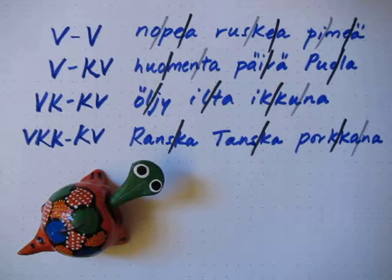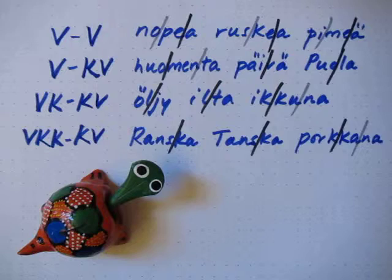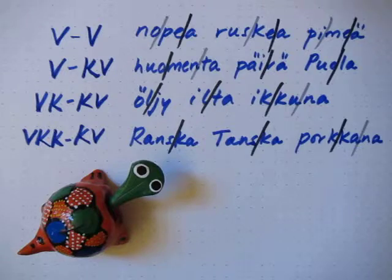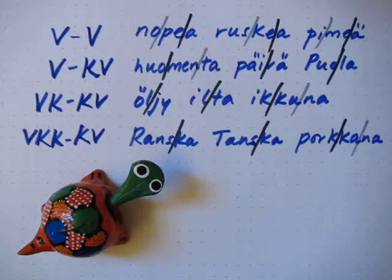There are four main categories of syllable patterns that you can memorize. The V in this video is vocali, the K is consonante. For more information, see the documentation about this concept.